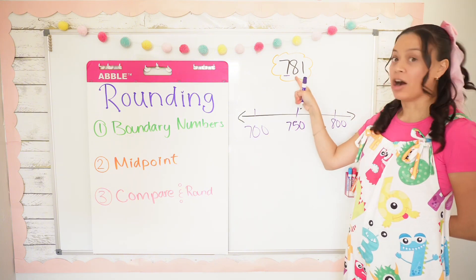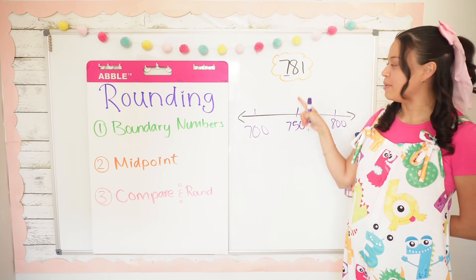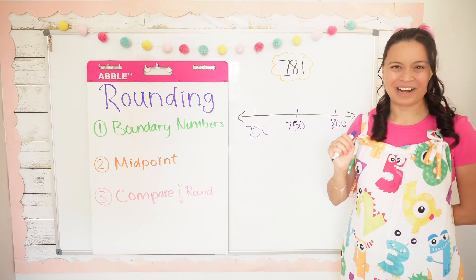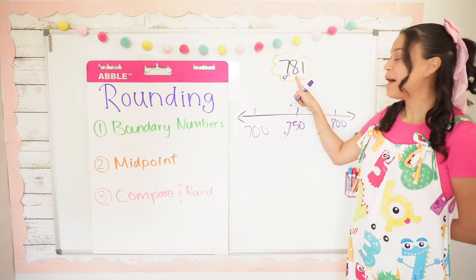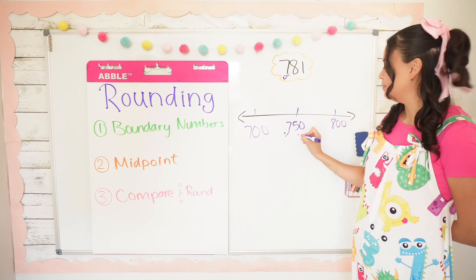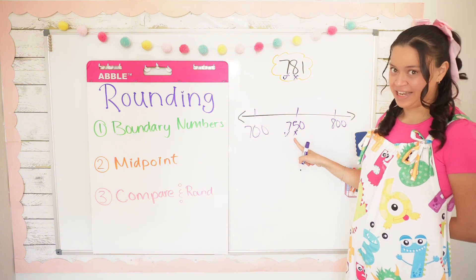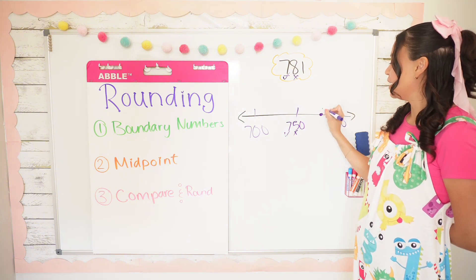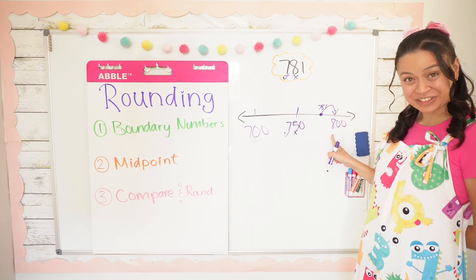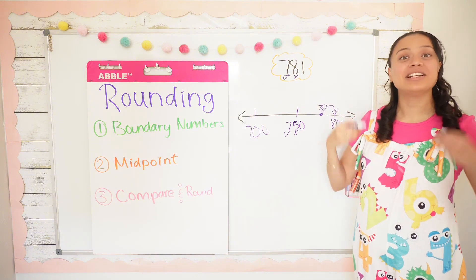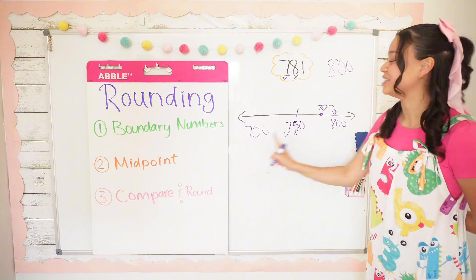Step three: compare our number with the midpoint and round. Remember: if our number is less than the midpoint we round down, but if our number is greater than or equal to the midpoint we round up. Is seven hundreds and seven hundreds equivalent? Yes. What about eight tens and five tens? No — eight tens is greater than five tens, so 781 gets plotted above the midpoint and we round up to 800. So 781 rounded to the nearest hundred is 800, because it's closer to 800 than it is to 700.